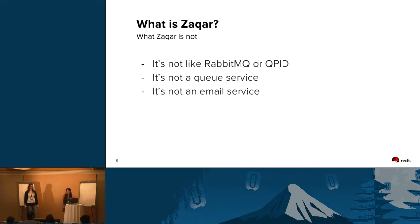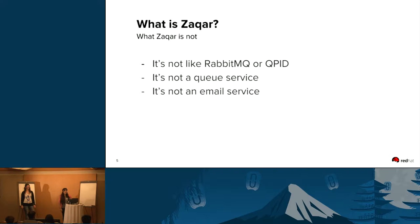What is not SACAR? SACAR is not like RabbitMQ or QPID. It doesn't aim to do what these services strive to do. They may have some overlapping use cases, but SACAR is mostly focused on providing messaging for web applications. It is not a queue service — it doesn't act like a standard or traditional queue service — and it is not an email service. It doesn't work with IMAP and is not for email at all.